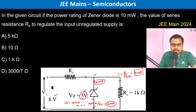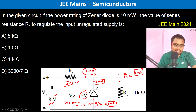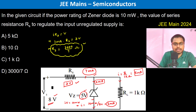Therefore, the current through Rs must be 7 milliampere. Since the input is 8 volts and the Zener voltage is 5 volts, the voltage drop across Rs must be 3 volts. Thus, I × Rs = 3 volts, so 7 milliampere × Rs = 3 volts, giving Rs = 3000/7 ohms. This is the answer.